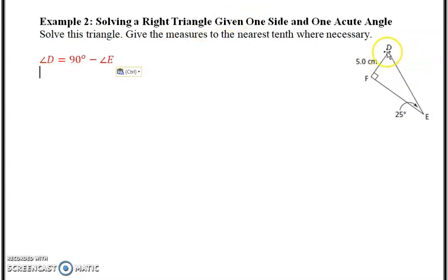Angle D is just going to be given by 90 degrees minus angle E. So that would be minus 25 degrees. 90 degrees minus 25 degrees, and that would equal 65 degrees. It says in there's tenth where necessary. So here it's not necessary to put it in.